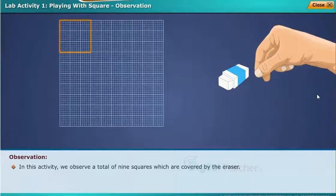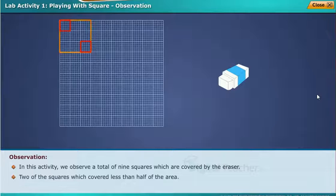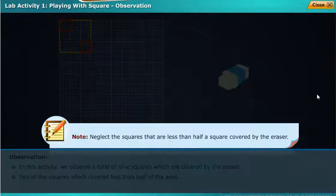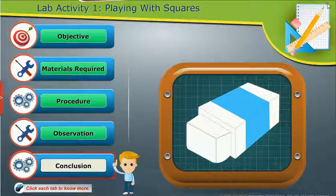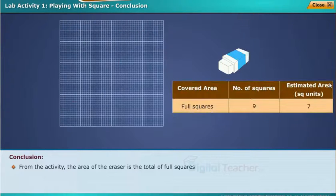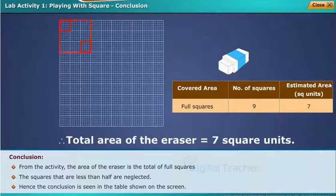Observation: In this activity, we observe a total of 9 squares which are covered by the eraser, with two squares covered less than half of the area. Note: Neglect the squares that are less than half a square covered by the eraser. Conclusion: From the activity, the area of the eraser is the total of full squares. The squares that are less than half are neglected. Hence, the conclusion is seen in the table shown on the screen.